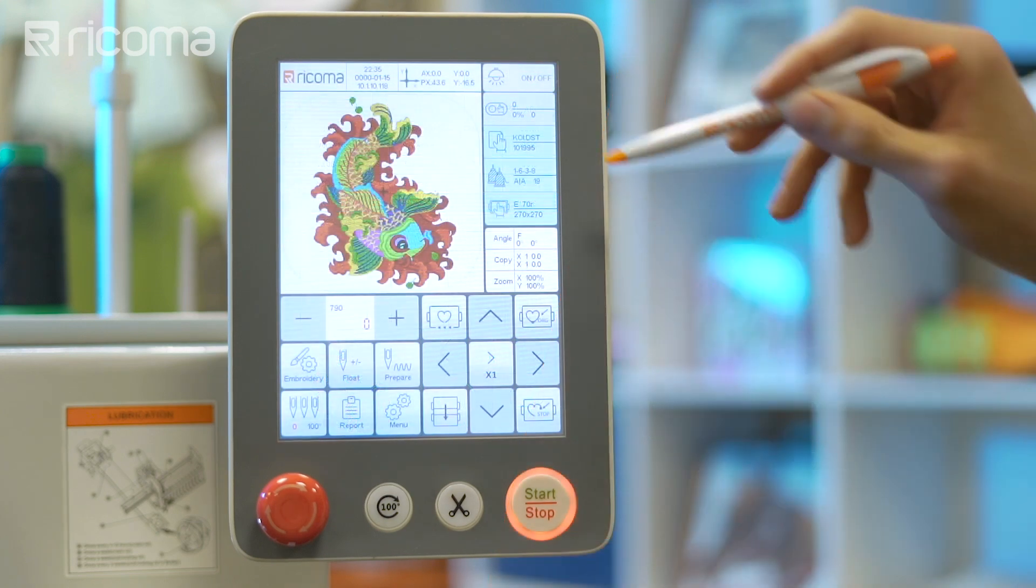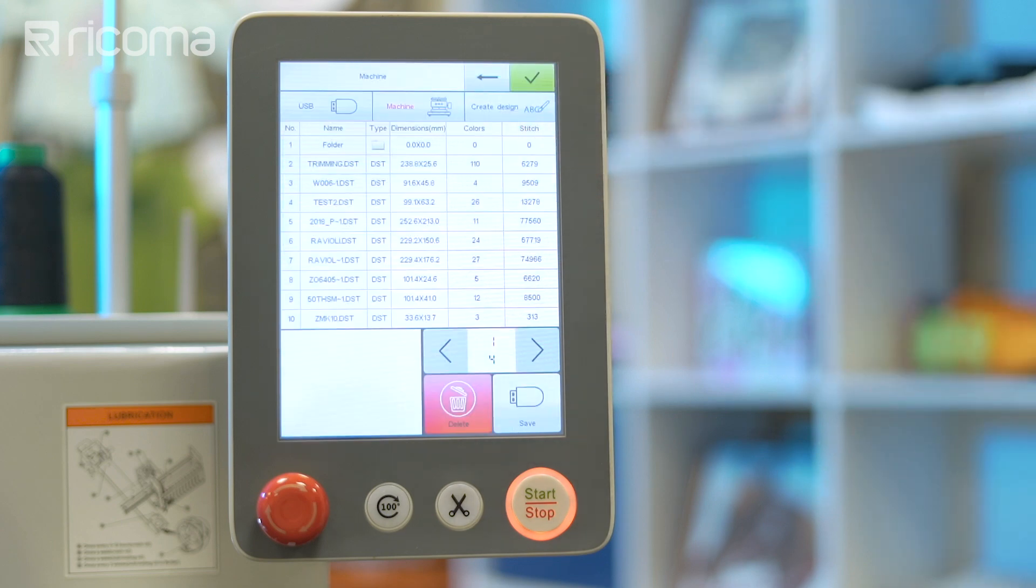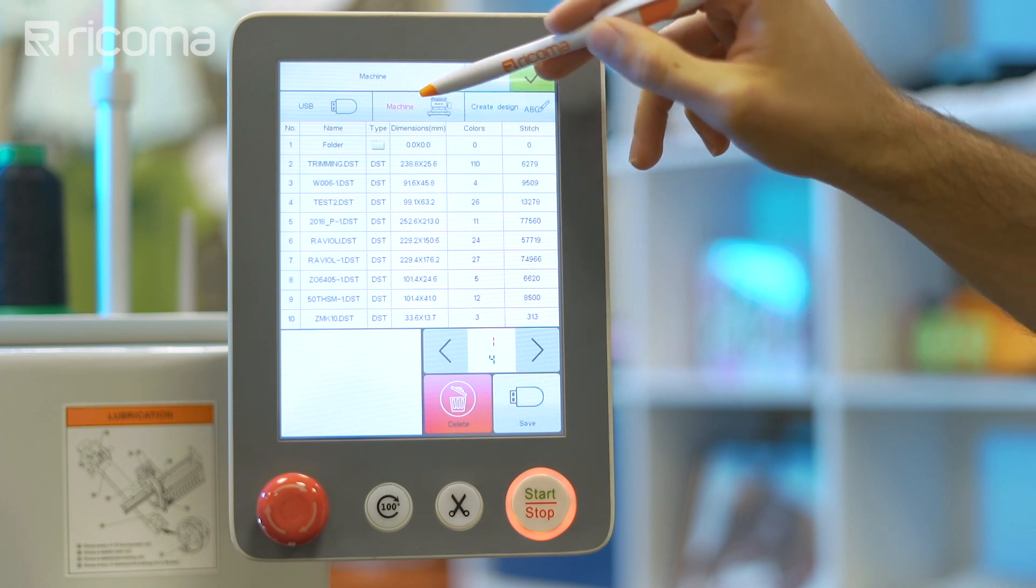With the embroidery mode unlocked, select the design menu to enter the USB slash embroidery machine's memory interface. Next, select the embroidery machine's memory.